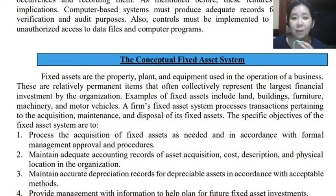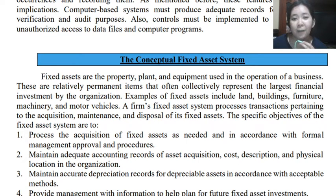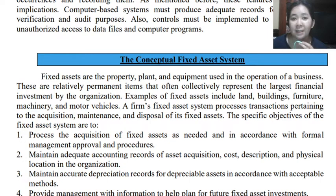Examples of fixed assets include land, buildings, furniture, machinery, motor vehicles, and others. A firm's fixed asset system processes transactions related to the acquisition, maintenance, and disposition of these fixed assets.